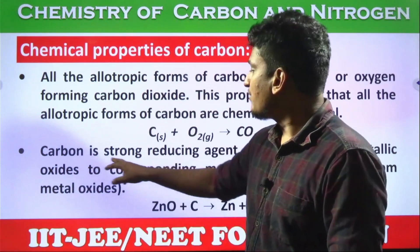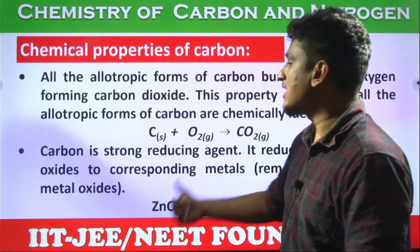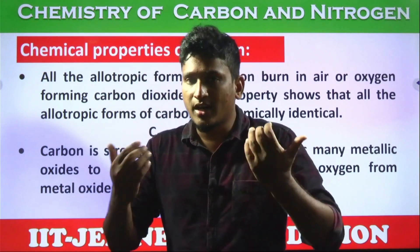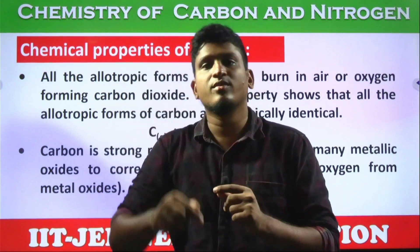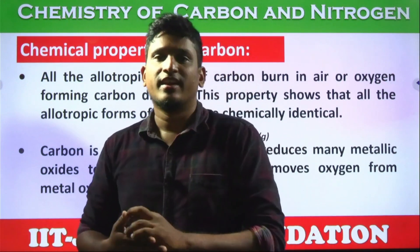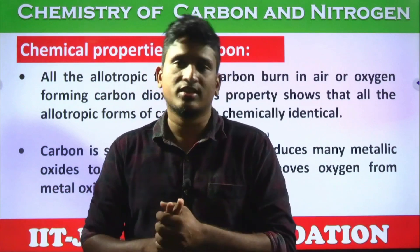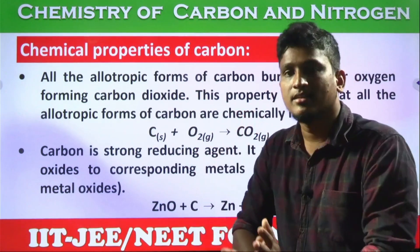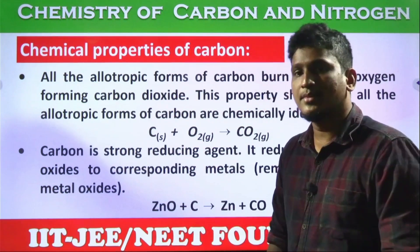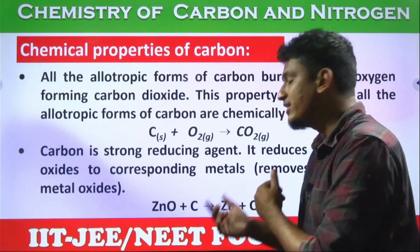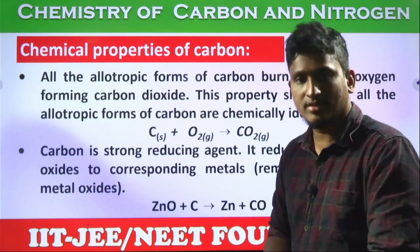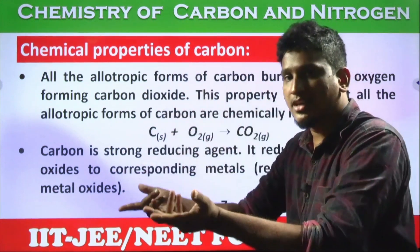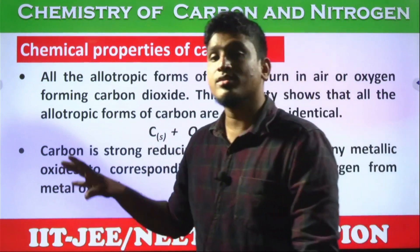Carbon is also a strong reducing agent — it reduces many metallic oxides to their corresponding metals. A reducing agent is a substance that itself undergoes oxidation while making the other compound undergo reduction. Reduction means removal of oxygen or addition of hydrogen. For example: zinc oxide plus carbon — carbon takes the oxygen and leaves the zinc behind, producing carbon monoxide.